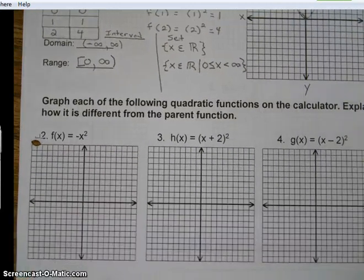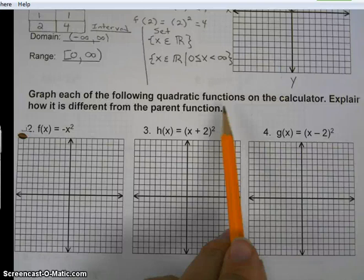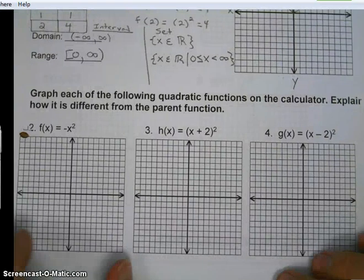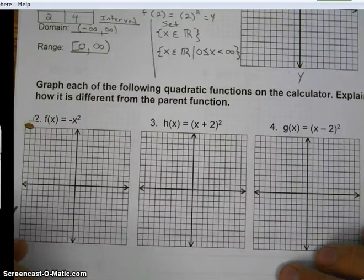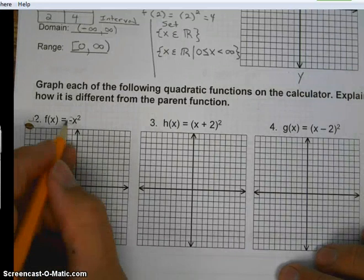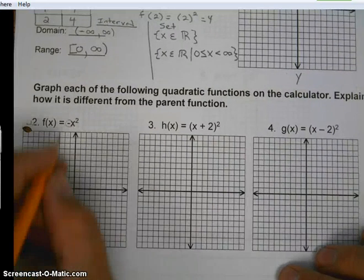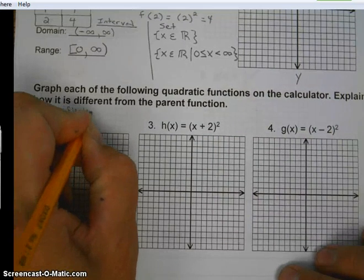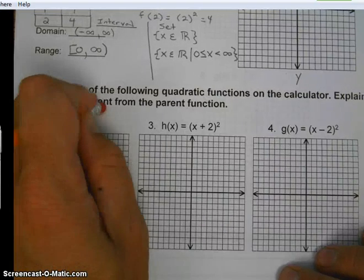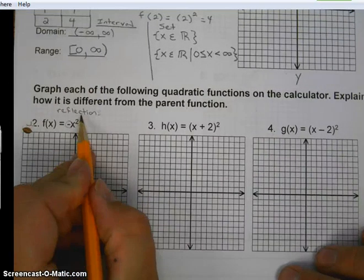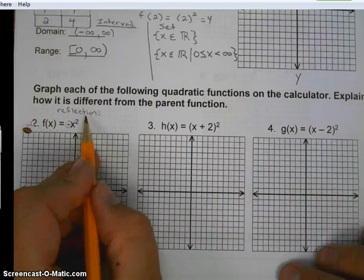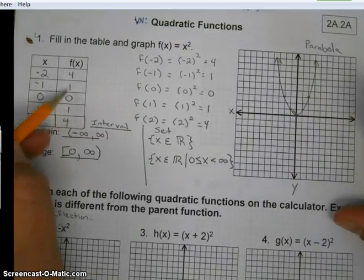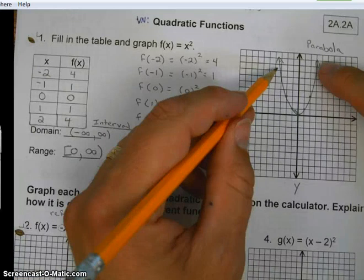Let's move on. Remember, if you don't understand something, please come and see me. It says, graph each of the following quadratic functions on the calculator. Explain how it is different from the parent function. So we're going to be looking at the parameter changes. So if you'll notice here the negative on the front. So when you have a negative on the front, what we have is called a reflection. Reflection means to flip. And in this case, we're going to be flipping this parabola over the x-axis. So notice all the y values are going to go from positive to negative. So it's just going to get flipped down.